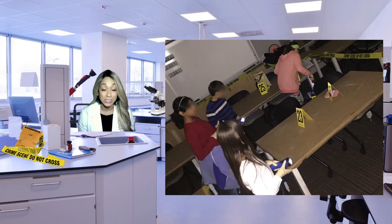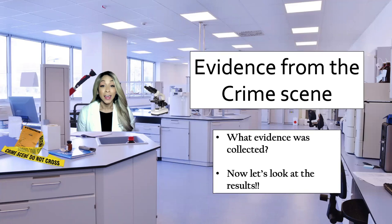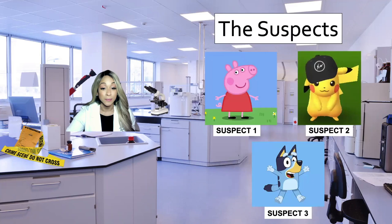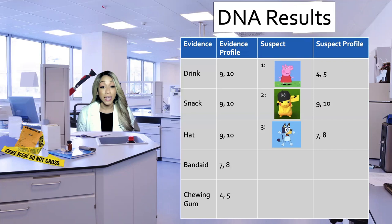After they're done with their crime scene collection, we all come back as a group and have a discussion about what they collected, then we dig into the results. First I introduce who the suspects are — I change the suspects for every crime scene depending on the students' age group and characters they may be familiar with. For this case, we have Peppa Pig, Pikachu, and Bluey as our suspects. The first thing we look at is the DNA results, so hopefully the students will have collected these items, and then we compare the suspect profiles to the evidence profiles.